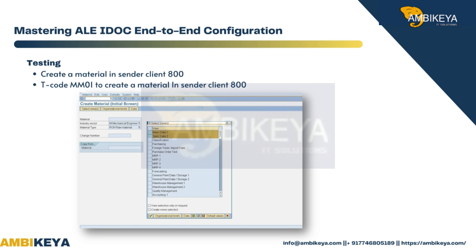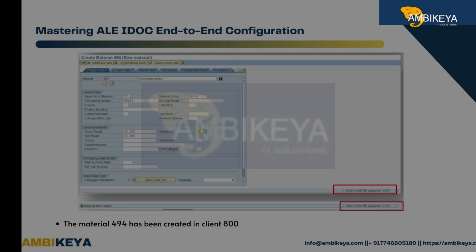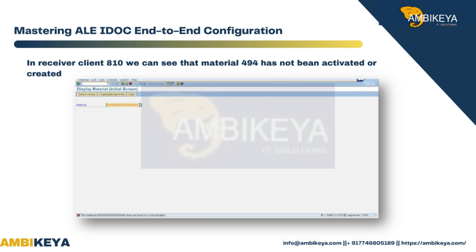Testing: Create a material in sender client 800 using T-code MM01. Material number 494 has been created in client 800. In receiver client 810, we can confirm that material 494 has not yet been activated or created there.